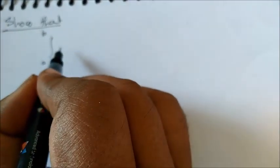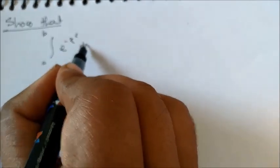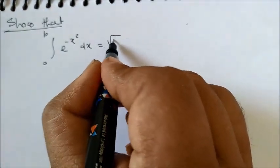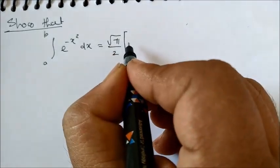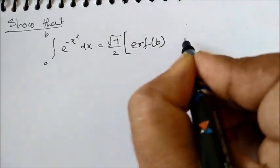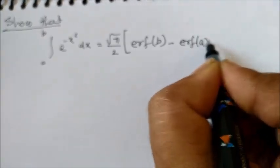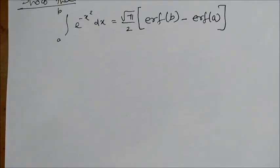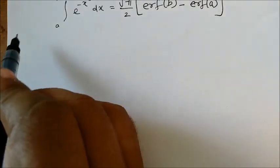Let us take one more problem where we can use the properties of the error function. The problem is: show that the integral from a to b of e to the power minus x squared dx is equal to root pi by 2, multiplied by the bracket erf(b) minus erf(a). Now see how we are using these properties.